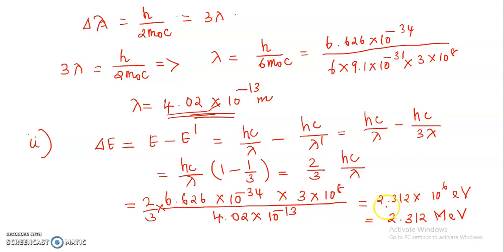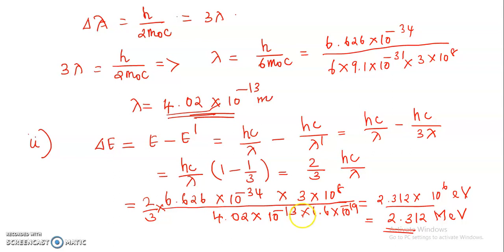We obtain the result in electron volts by dividing by 1.6×10⁻¹⁹, the electron charge. Otherwise we would obtain the result in joules, but for simplicity we prefer to express energy values in electron volts or mega electron volts. So I used the electron volt unit. Thank you for watching my video.